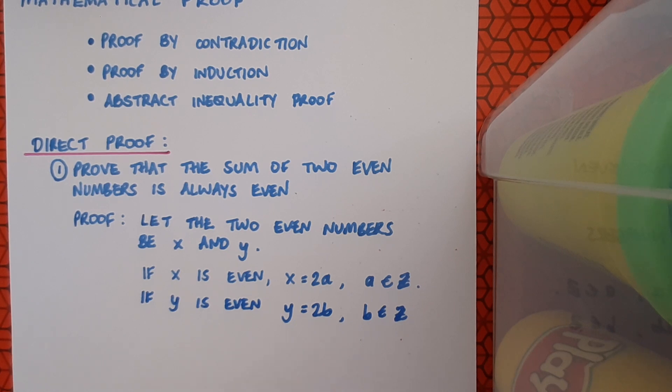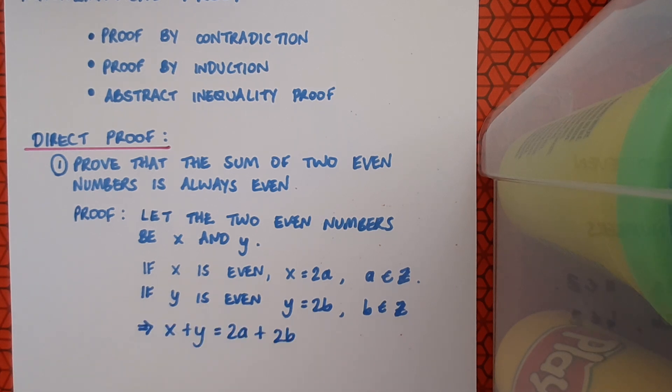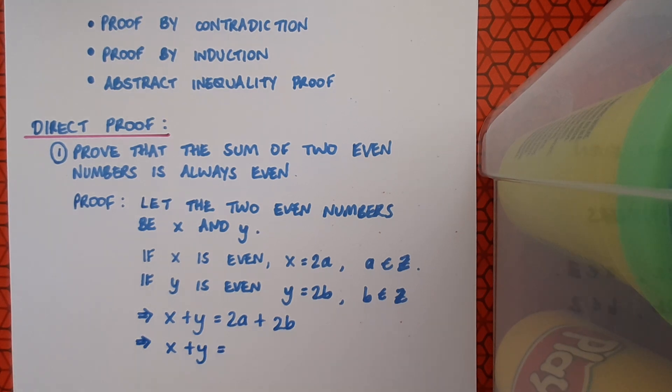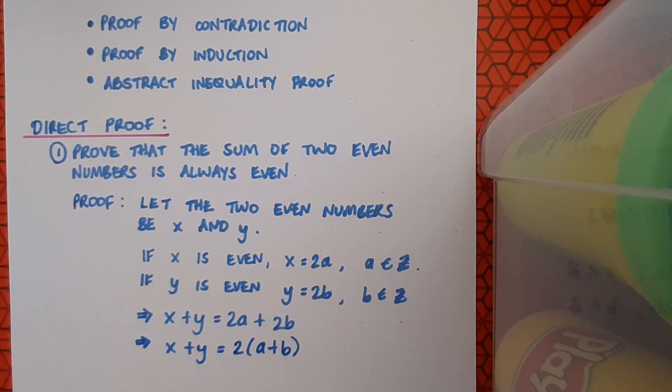It's important here to note that I've called x by one name 2a and y I've given it a different value 2b, because x and y aren't necessarily the same. So this implies that x plus y equals 2a plus 2b. And in my following statement then, I notice that well, 2a plus 2b, I could actually factorize two out of both of those terms. So actually this statement leads me on to the statement x plus y equals two times a plus b.